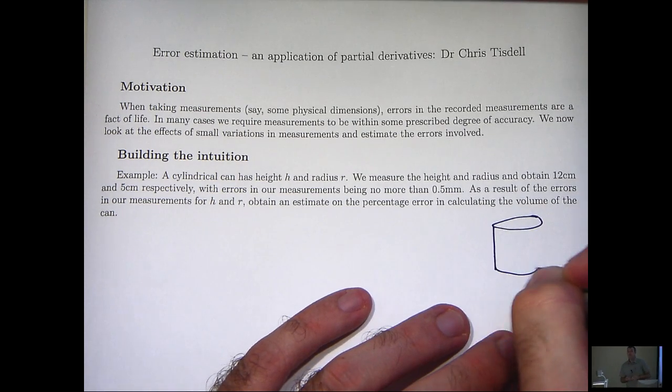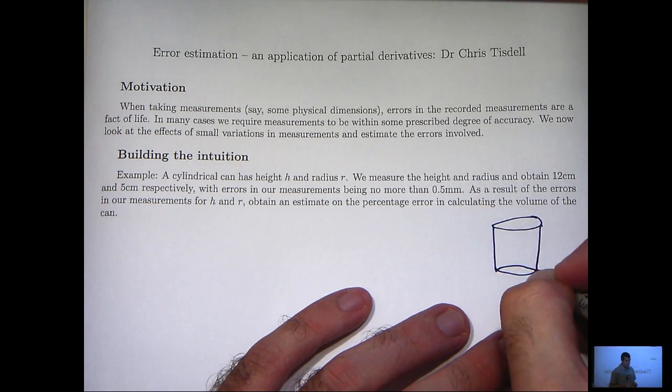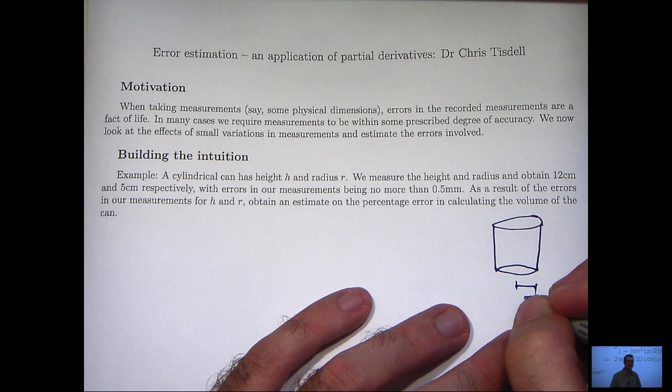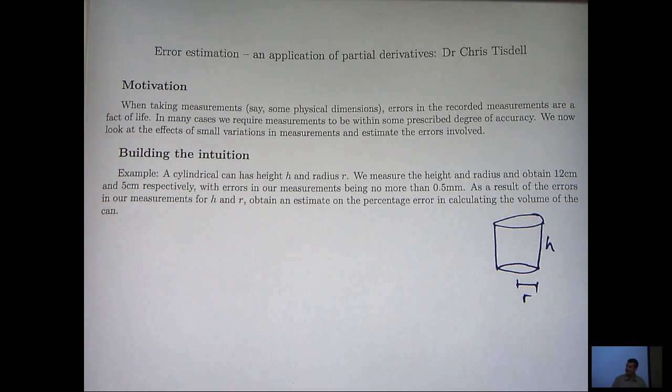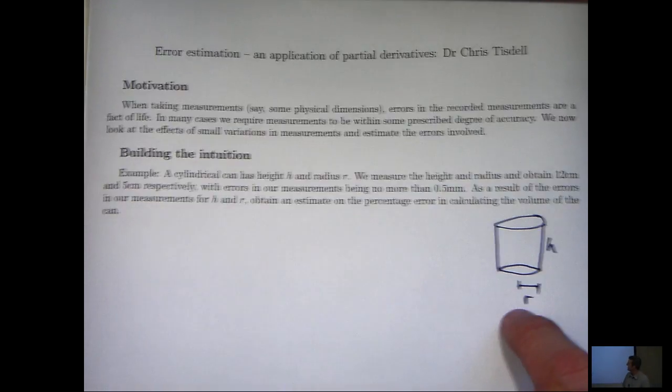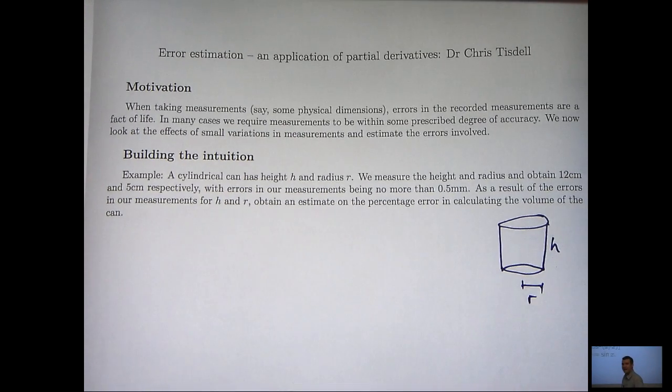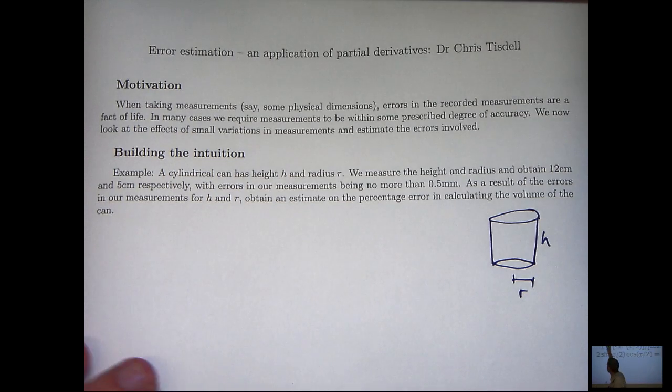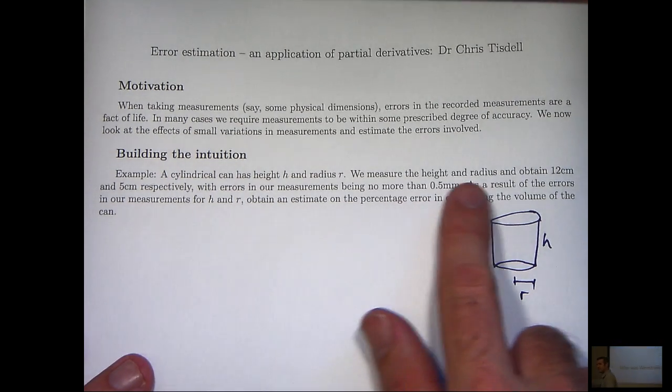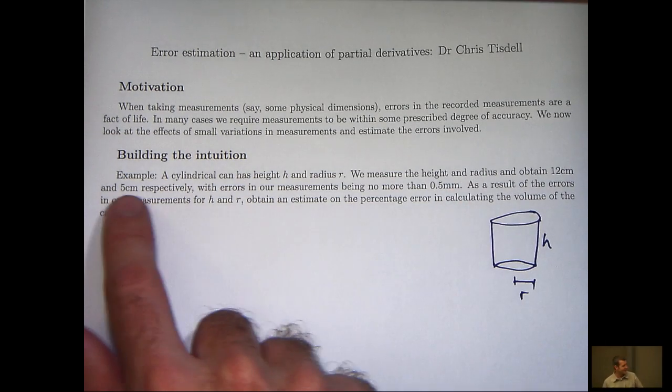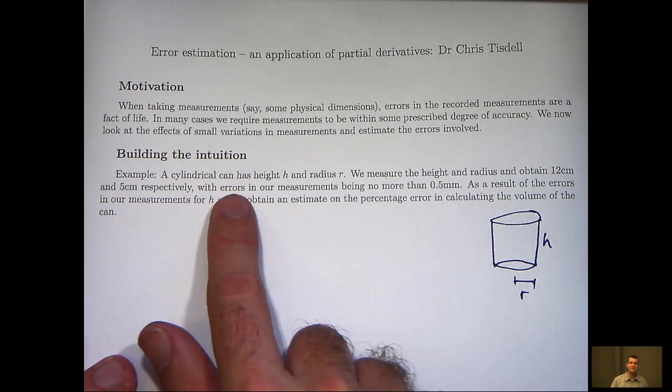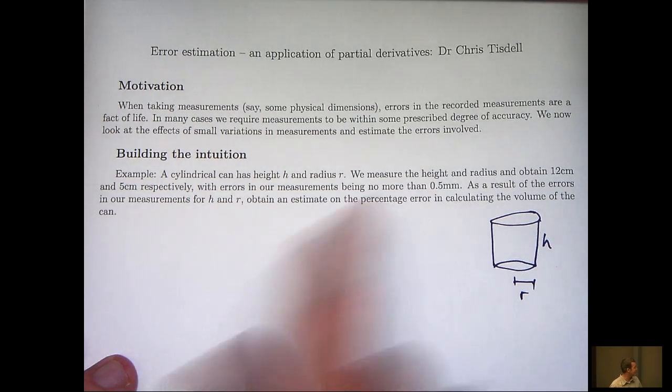So let me put this into a particular example here. Suppose that we are wanting to calculate the volume of a cylindrical can. To do that we would have to measure the radius and the height. In this particular example, our measurements for the height is 12 cm and the measurement for the radius is 5 cm, with errors in our measurements being no more than half a millimeter.